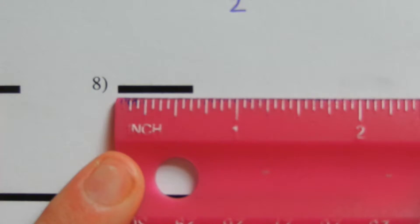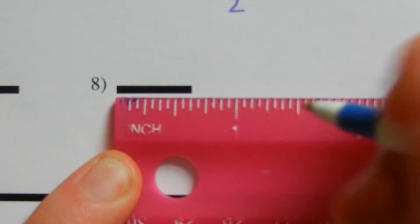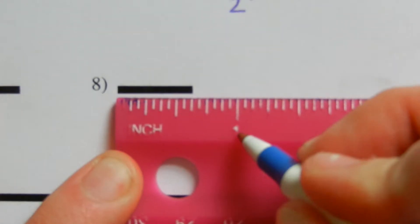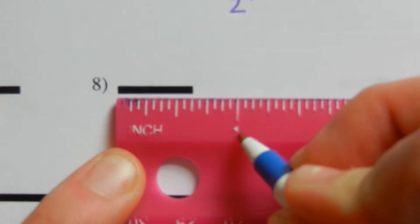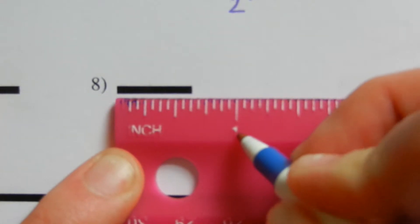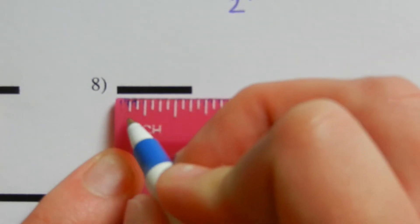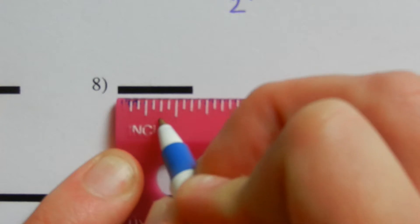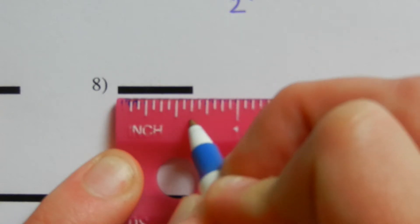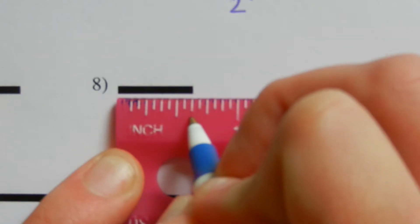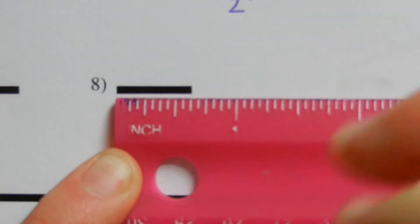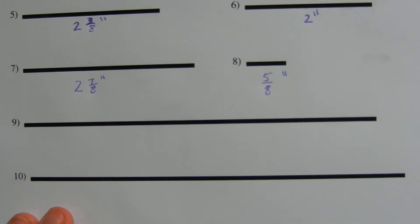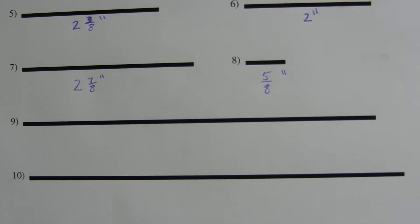Number eight: line our ruler up with the edge. We do not even make it to the one inch mark, so we know this is less than an inch — it's a fraction of an inch. Counting: one eighth, two eighths, three eighths, four eighths, five eighths. So this is approximately five eighths of an inch.